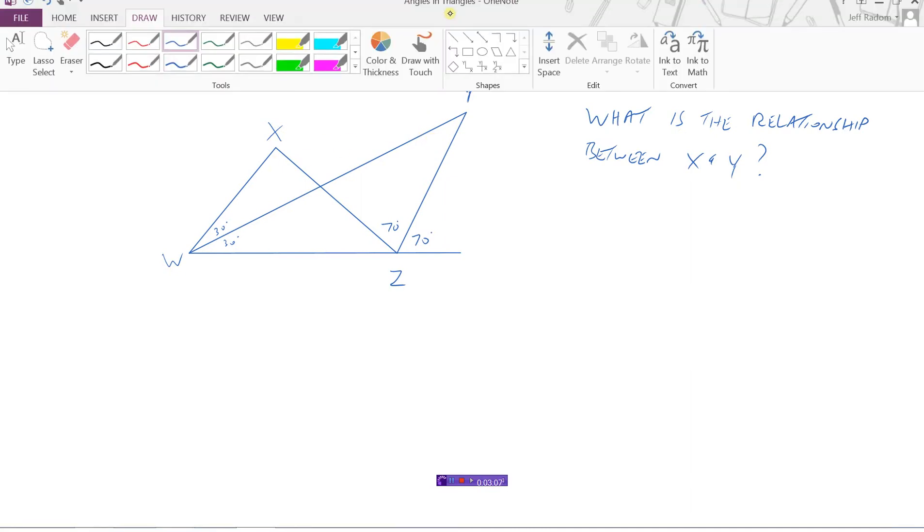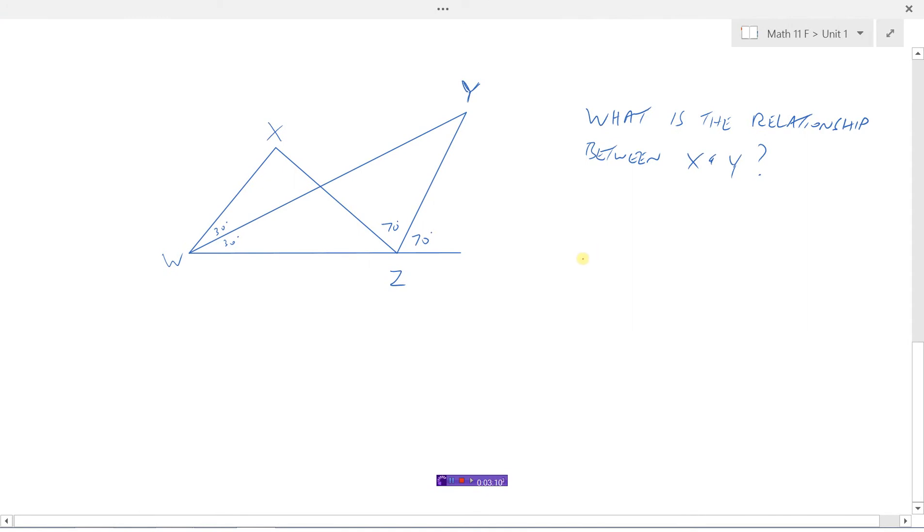So let's get a different color here. Well, what do we know first? Well, I know that angles on a line here have to add to 180 degrees. So I've already got 70 and 70. So 70 plus 70 is 140 degrees. So then angle XZW is going to equal 180 minus 140, which is 40 degrees. So this should be 40 degrees here, because all of these angles would have to add to 180 degrees.